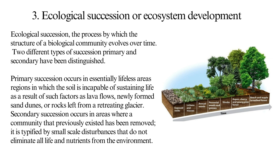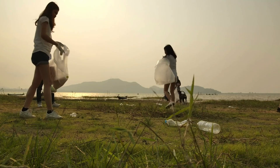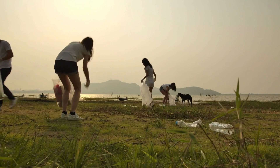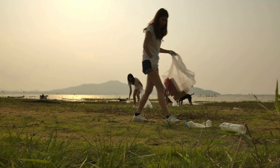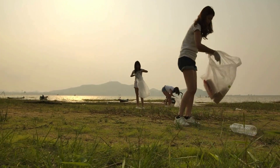Secondary succession occurs in areas where a community that previously existed has been removed. It is typified by small-scale disturbances that do not eliminate all life and nutrients from the environment. Is nature conservation necessary?